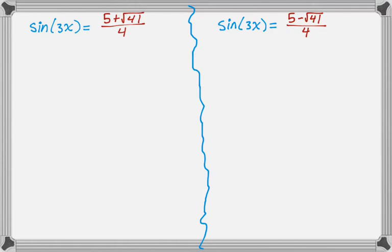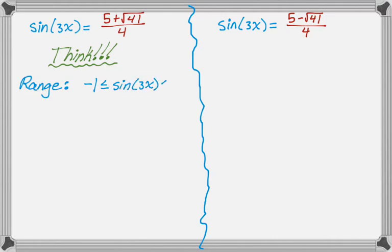The first thing you want to do is really think while you're solving these. The problem is sine is a very limited function. We know that sine of 3x has a particular range between negative 1 and 1. And we need to think about that, because 5 fourths by itself is already bigger than 1. And then I'm going to add something to it. So if I take 5 fourths and add something to it, guaranteed that is greater than 1. And that means sine of 3x can never equal that.